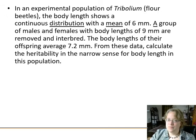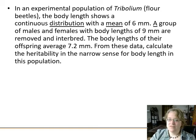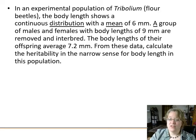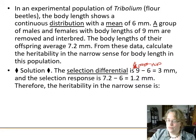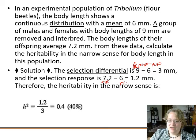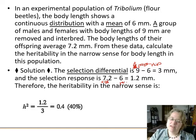Another example: an experimental population of flower beetles has a mean body length of 6 mm. We select large beetles with body lengths of 9 mm, interbreed them, and their offspring have body lengths of 7.2 mm. The selection differential is 9 minus 6 equals 3 mm. The selection response is 7.2 minus 6 equals 1.2 mm. Narrow sense heritability is 1.2 divided by 3, which is 0.4 — below 0.5, so low heritability for body length.